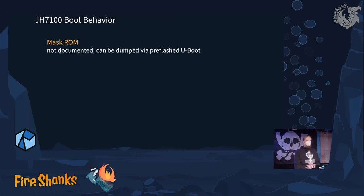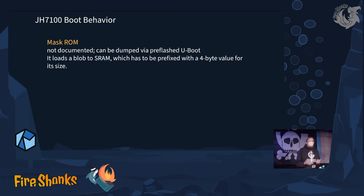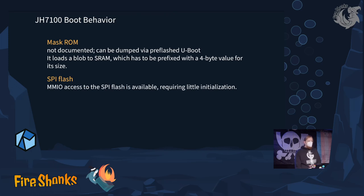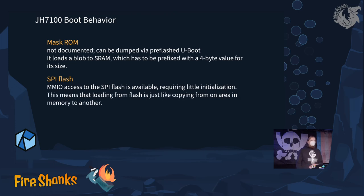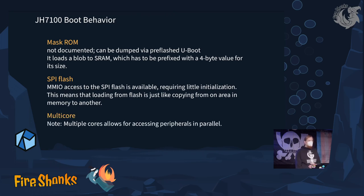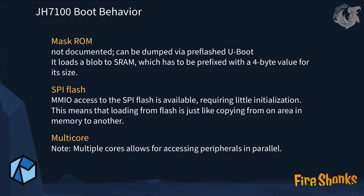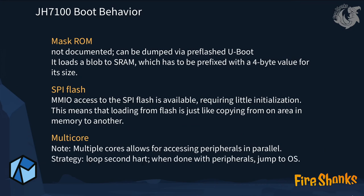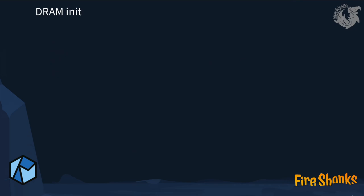The boot behavior here is actually simple but not well documented. The mask ROM from U-Boot loads a blob to SRAM, and we only have to give four bytes of whatever comes next in SRAM. It is a bit limited by what fits into SRAM, but we can also load from SPI flash using MMIO — memory-mapped I/O — so I can access it as if it were regular memory without actively talking to the SPI flash. With multiple processing cores, we have to ensure that ORBoot does not run on both cores simultaneously, so we set one to just loop without doing anything and let the other one work.